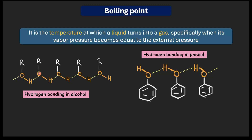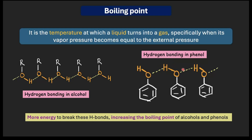Why does this matter? Hydrogen bonding creates a strong, sticky force between molecules — they are held much closer together. As a result, when you try to boil the liquid, you need more energy to overcome these hydrogen bonds, and that raises the boiling points of alcohols and phenols significantly. This is why their boiling points are generally higher than other organic compounds like hydrocarbons, ethers, or haloalkanes of similar molecular mass.